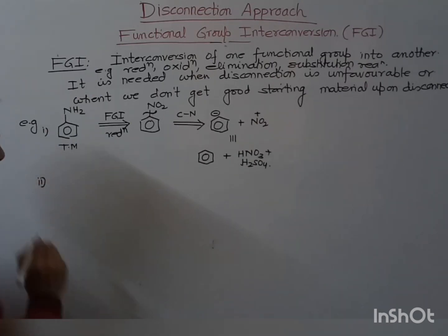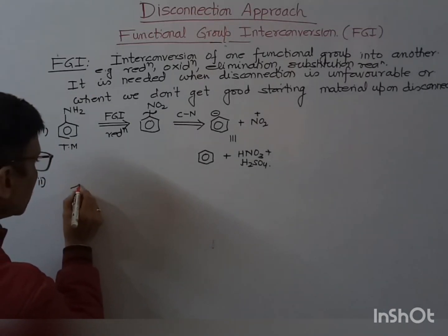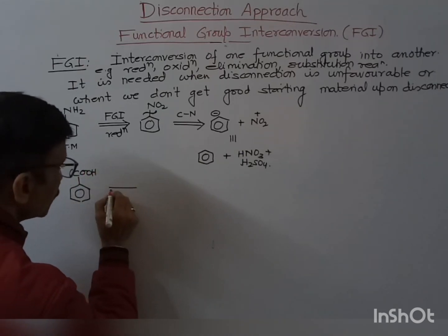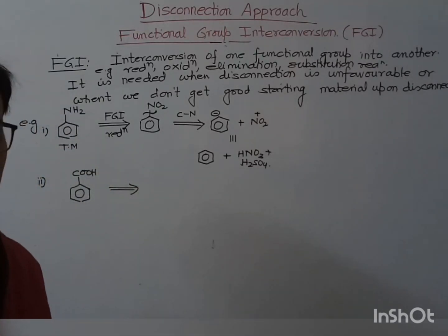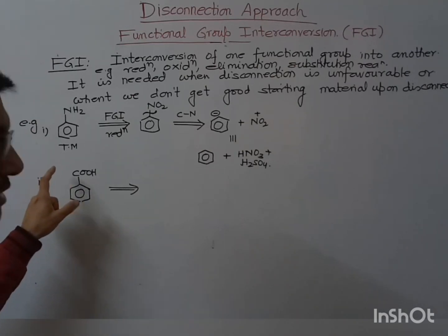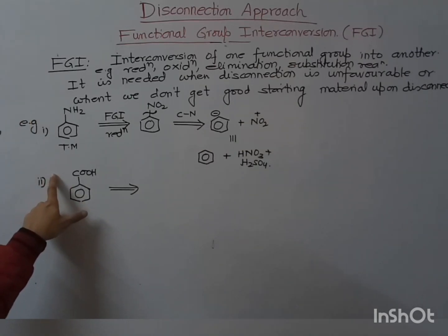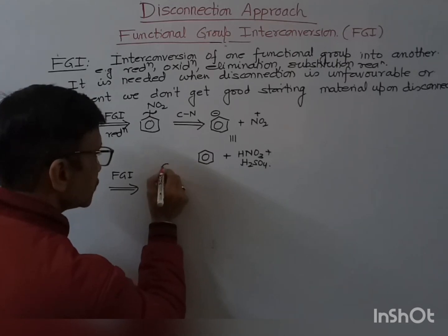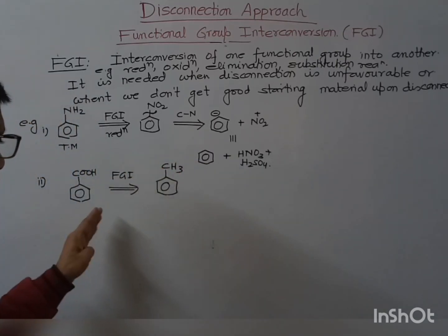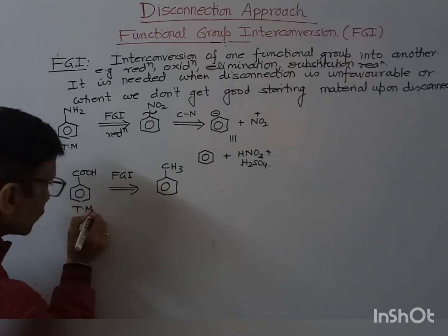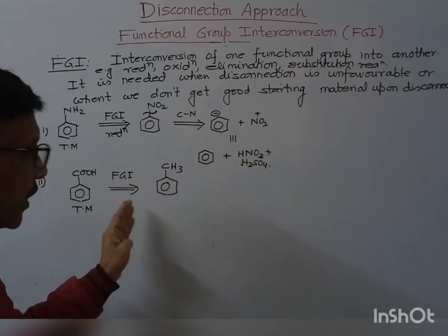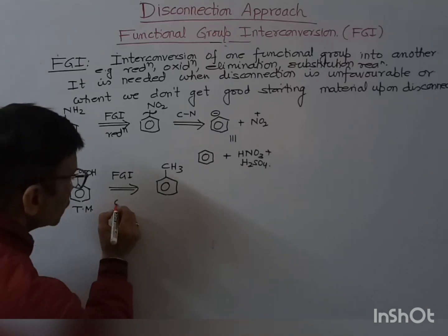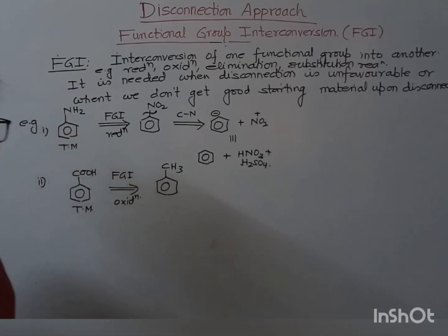The second example: suppose if you have benzoic acid — a COOH group on benzene. In such a case, when you see the COOH group, you should do the FGI and convert this COOH group into a CH3 group. If you think in reverse direction, how can you obtain this benzoic acid from toluene? By oxidation in presence of KMnO4. So you write 'oxidation' below this arrow.